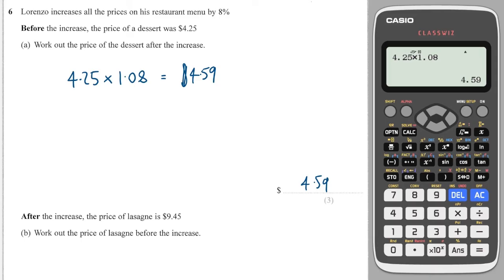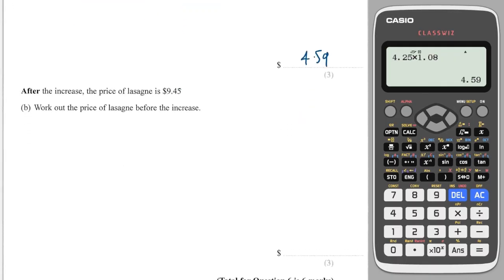And then if we say after the increase the price of the lasagna was $9.45, work out the price before. Well, to reverse the process I have to divide by the multiplier, and the multiplier was 1.08. So again, a classic reverse percentage. Whenever you need to work out the value of something before an increase or decrease, you divide by whatever that increase or decrease multiplier is.